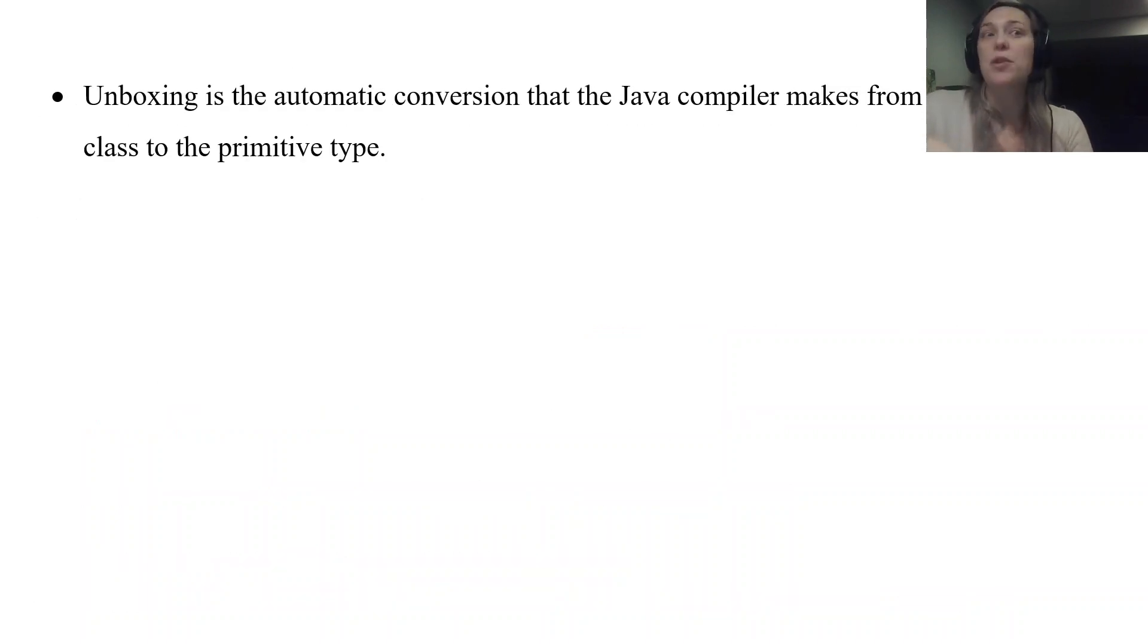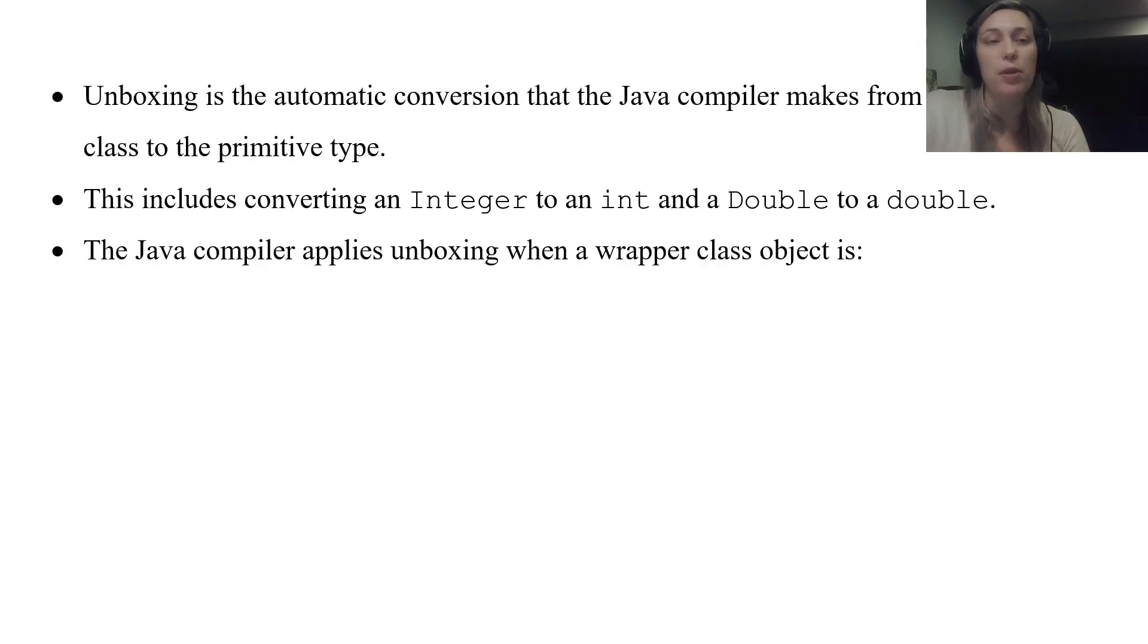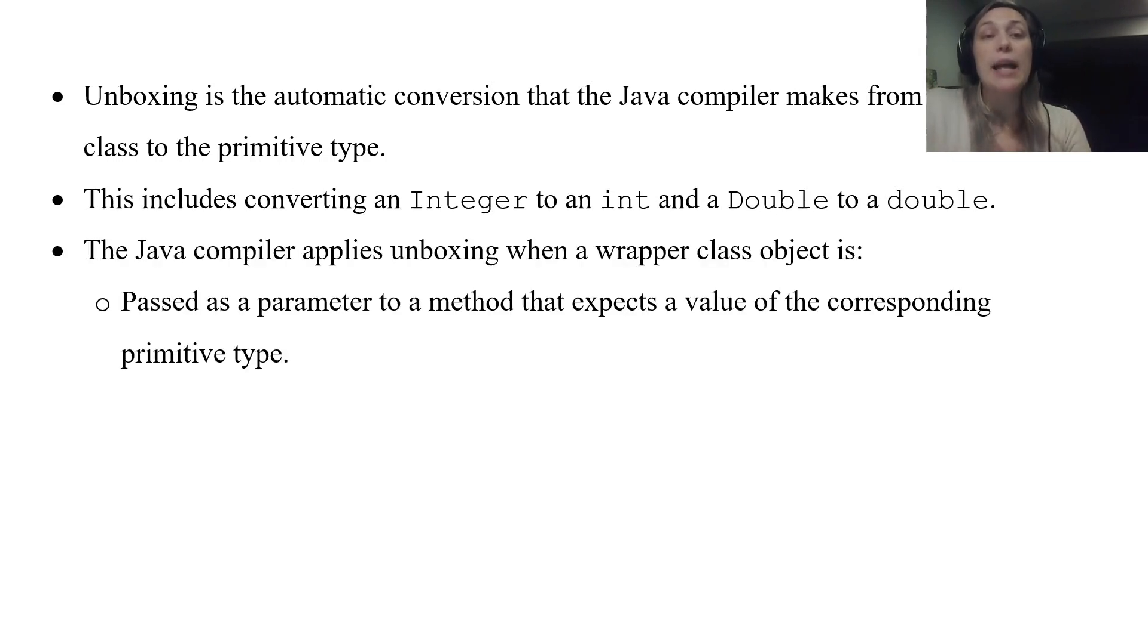Unboxing is going the opposite way where it takes an object and it converts it down to a primitive. Or it takes a wrapper class and converts it to a primitive. Integer to an int and Double to a double. It applies unboxing when it's passed as a parameter but it expects a primitive data type. Or you assign to a variable of a primitive type. So basically what we just saw but opposite.